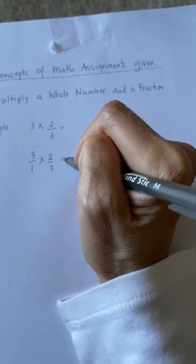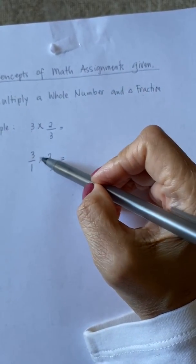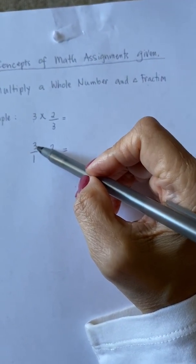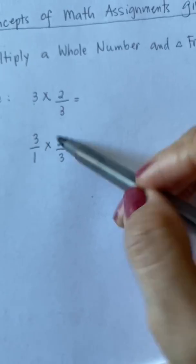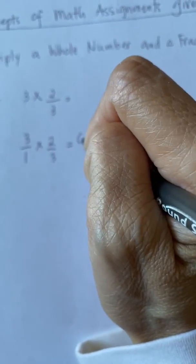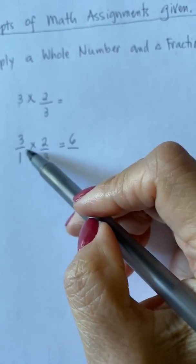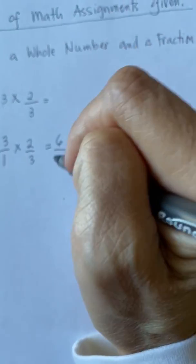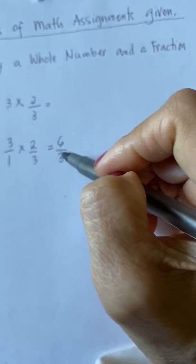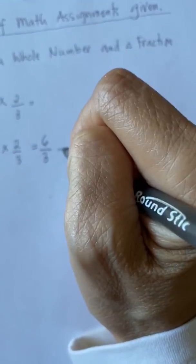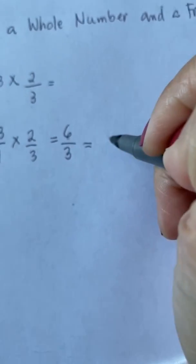Which is equal to... We multiply the numerators. 3 times 2, which is equal to 6. And 1 times 3, which is equal to 3. 6 divided by 3 is equal to 2.